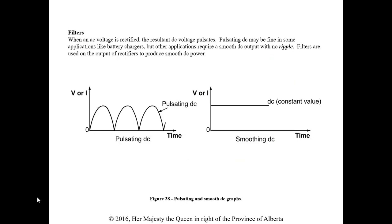Now we get into talking about filters — putting components into circuits to take advantage of their characteristics. When an AC voltage is rectified, the resultant DC voltage pulsates. Pulsating DC may be fine for some applications like battery chargers, but other applications require smooth DC output with no ripple. Filters are used on the output of rectifiers to produce smooth DC power.